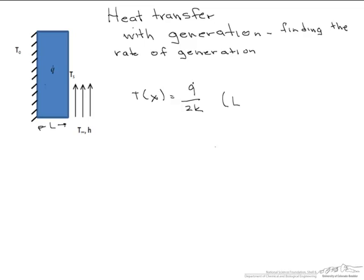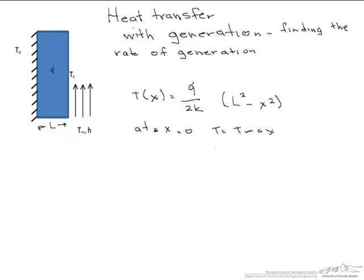Where K is the thermal conductivity, times L squared, which is the length of the wall, minus x squared. So at x equals zero, our T equals a maximum. Let's rewrite that in terms of our rate of heat generation, Q dot, which equals T max times 2 times K divided by L squared.